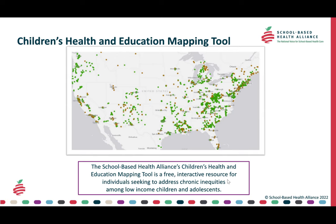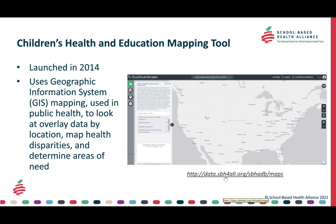The School-Based Health Alliance's Children's Health and Education Mapping Tool is a free interactive resource for individuals seeking to address chronic inequities among low-income children and adolescents. Initially introduced in 2014 in conjunction with Health Landscapes at the Robert Graham Center for Policy Research in Family Medicine and Primary Care, the tool has progressed into a user-friendly system designed to identify and characterize medically underserved areas and expand health service accessibility. The tool uses geographic information system or GIS mapping for making data-driven decisions.